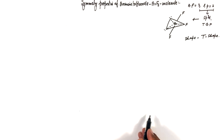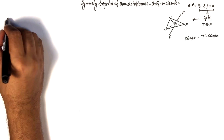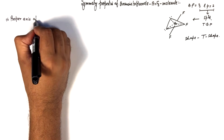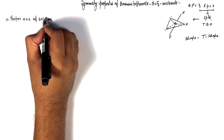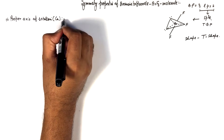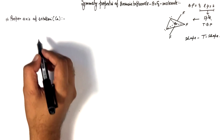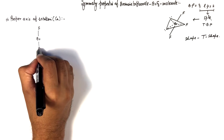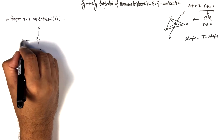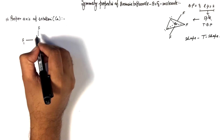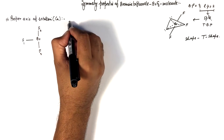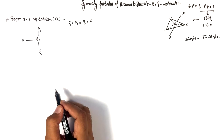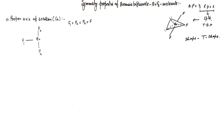Let us start our investigation from the proper axis of rotation. We will search how many proper axes of rotation are present in this molecule, meaning we will perform the Cn operation. Since this molecule is planar, we draw the T-shape for better understanding, marking the fluorine atoms F1, F2, and F3. Three axes are visible in this molecule.